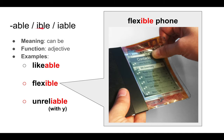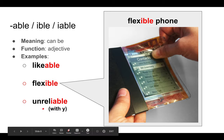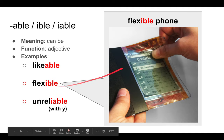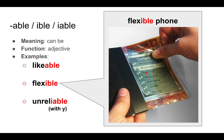Then we have -able, and its meaning is 'can be,' and it's an adjective. For example, likable, which means can be liked. Flexible, which means can be flexed. And unreliable, which means cannot be relied on — the 'un' negates it. So here we go: a flexible phone. See, he's bending the phone. The phone is flexible. It can be flexed.